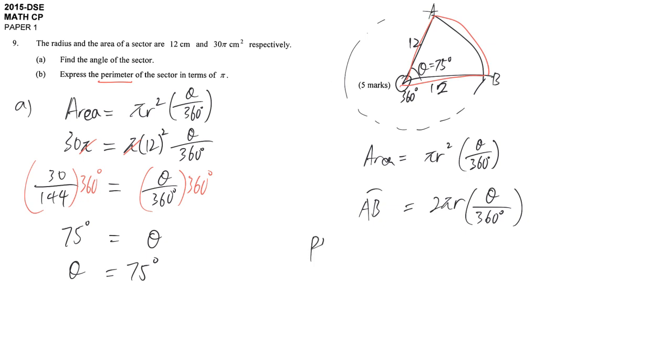So to get the perimeter, it's equal to the first radius plus the second radius. We have two radii. And also we have the arc length. We use AB to represent it here. So this is 2R and then plus 2πR times θ divided by 360, the arc length AB.